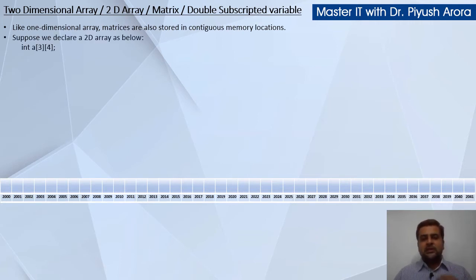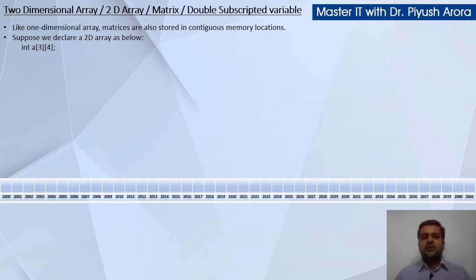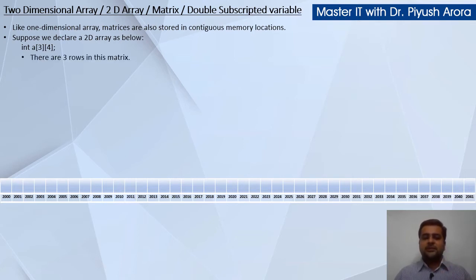Assume you have declared a two-dimensional array: int A[3][4]. This matrix has three rows and four columns. Rows are the horizontal (sleeping) lines and columns are the vertical (standing) lines.